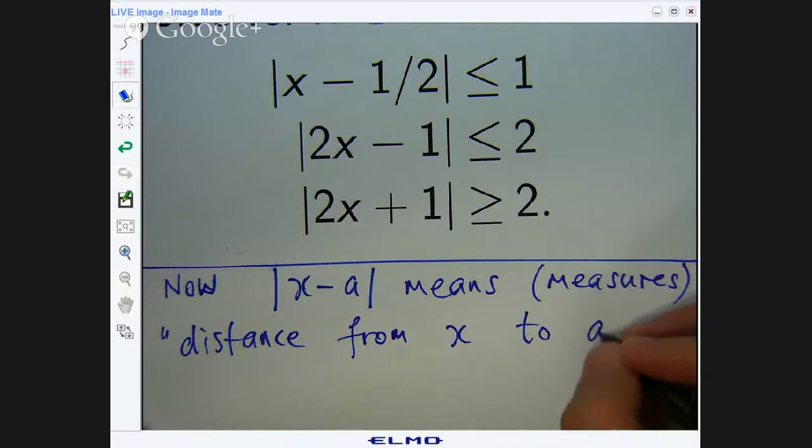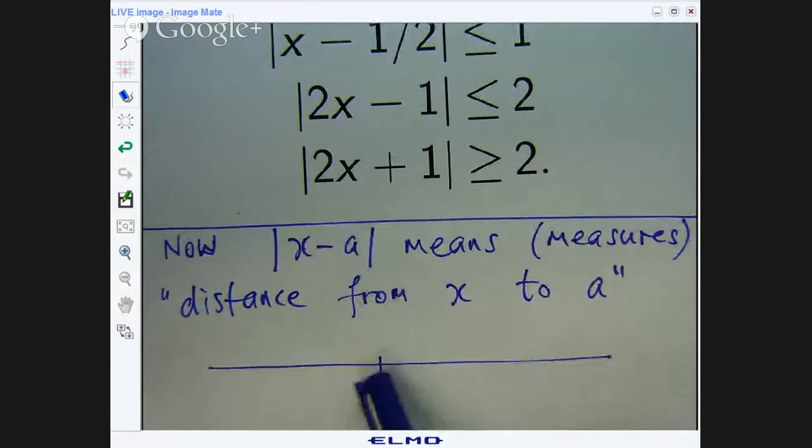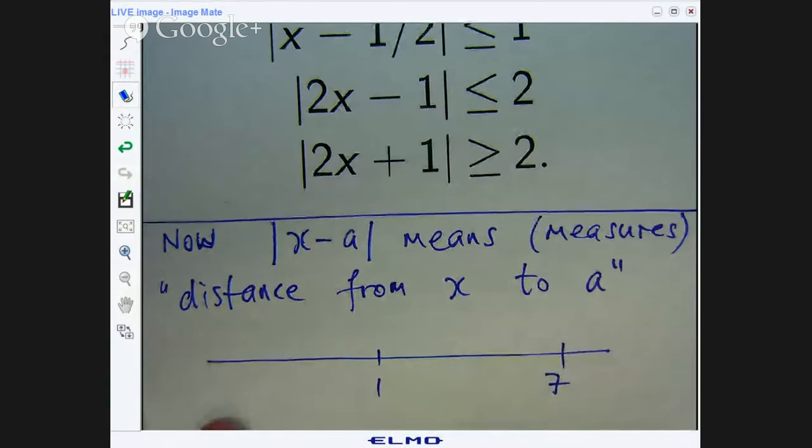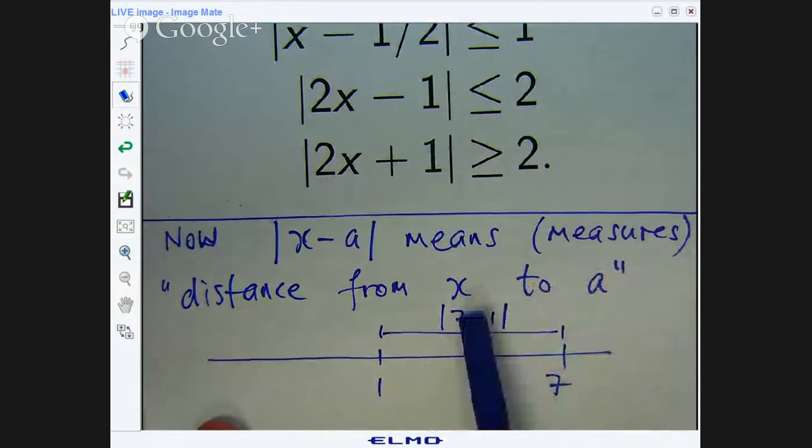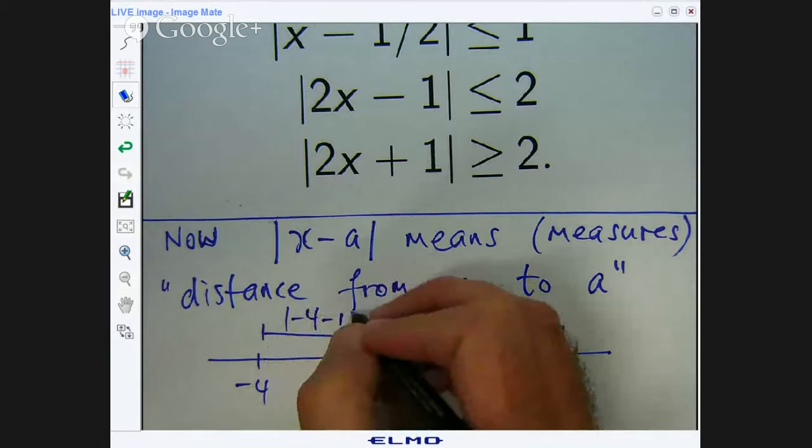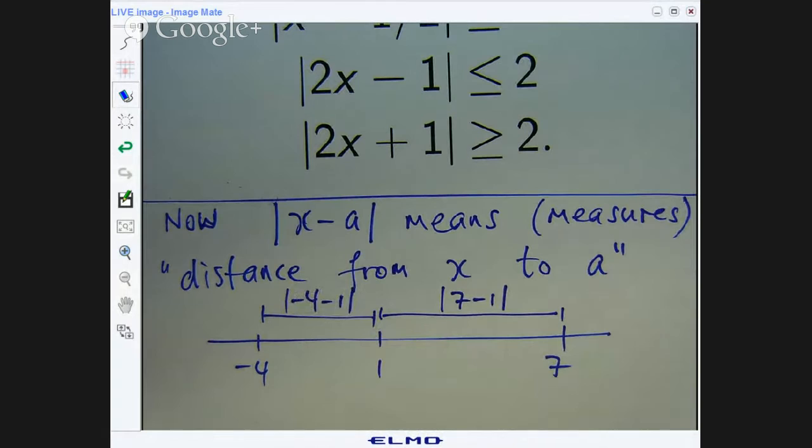So if I was to draw a little number line in here and say a is the point one and say b is the point, say, seven, this distance here is of course the absolute value of seven minus one, which is just six. If x is, say, negative, let's go down to, say, negative four, this distance is negative four minus one absolute. That will give you the absolute of negative five, and then you take the absolute of negative five and you'll get five. So it just revolves around distance.